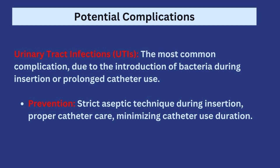Now let's talk about the complications of urinary catheterization. The first and most common is urinary tract infection (UTI). This occurs because inserting the catheter or leaving it in the urinary tract too long can introduce or allow bacteria to ascend into the urinary tract. Prevention includes maintaining strict aseptic technique during insertion, caring for the catheter properly, and removing it as soon as it is no longer needed to minimize the duration and reduce infection risk.